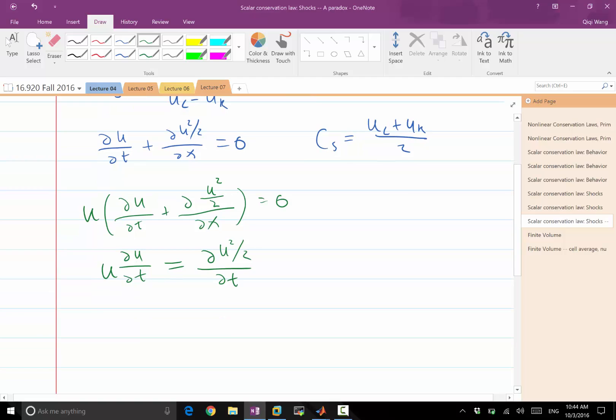There is a similar trick you can use on the spatial derivative term. U times ∂U²/∂x equals something times ∂U³/∂x.